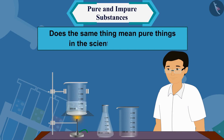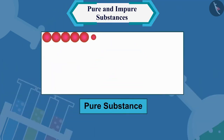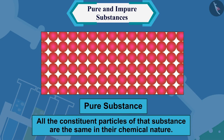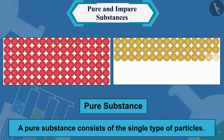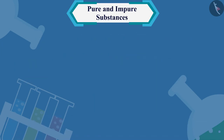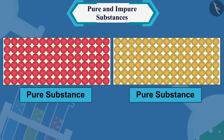But does the same thing mean pure in the scientific definition? No. When a scientist says that something is pure, it means that all the constituent particles of that substance are the same in their chemical nature. A pure substance consists of a single type of particles.